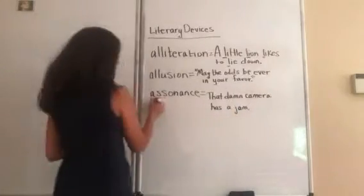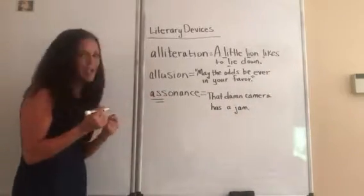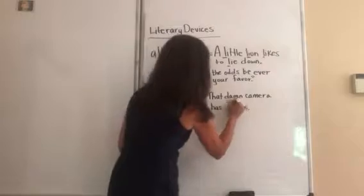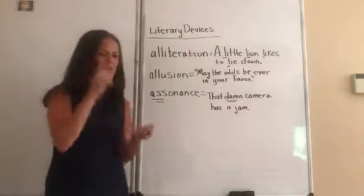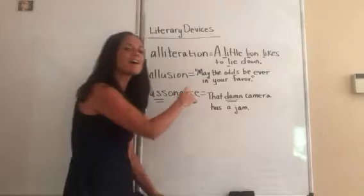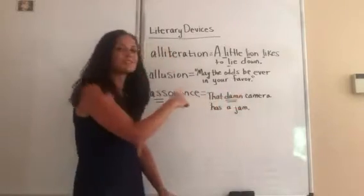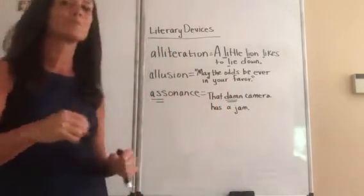How are we going to remember this one? Well, 'ass' is kind of a bad word, and 'damn' is kind of a bad word. So when you're thinking, what did assonance mean again? You can think, oh yeah, that damn camera has a jam. Hopefully that helps you remember it.